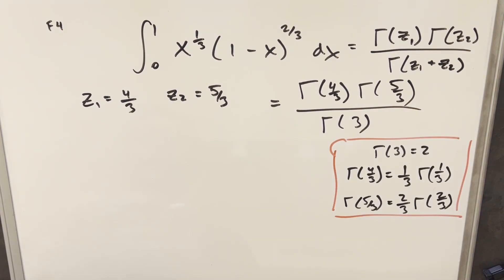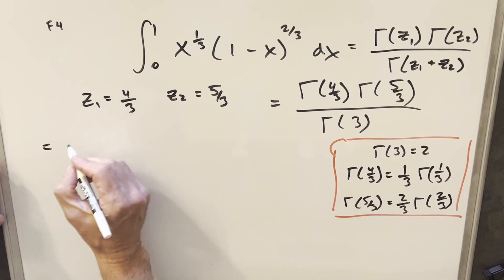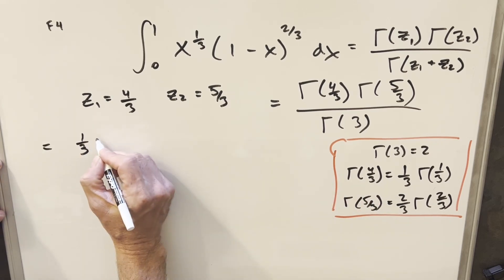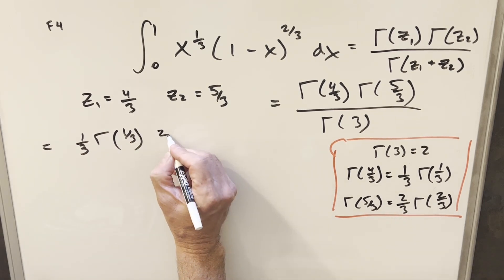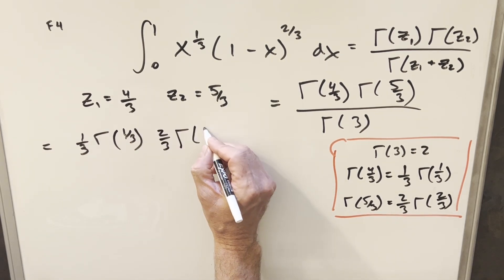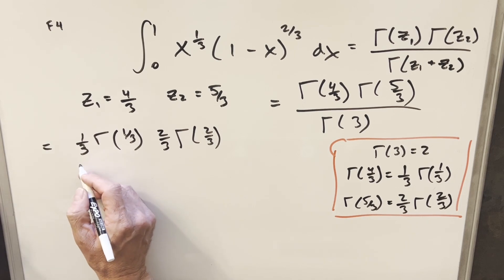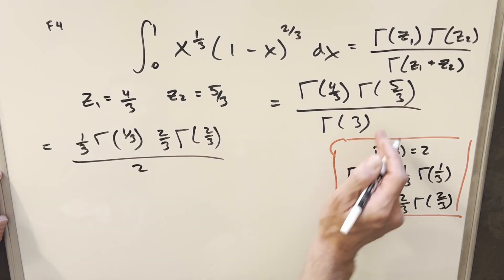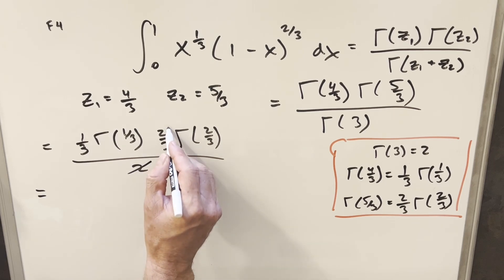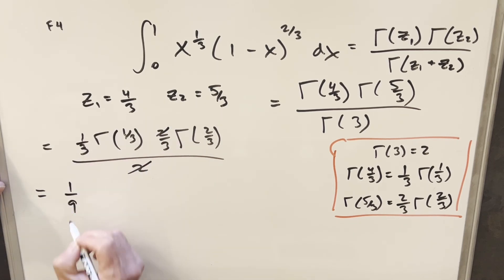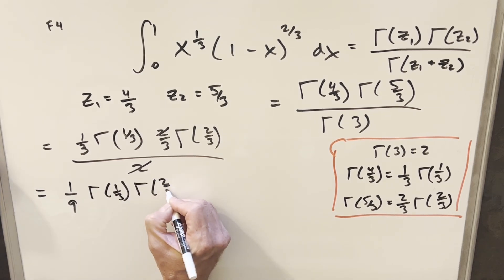So now from here, I'm going to take these values that we found and plug them in here to continue. For gamma of 4/3, I'm going to write this as 1/3 times gamma of 1/3. Then for gamma of 5/3, we'll have this value of 2/3 times gamma of 2/3. And then in the denominator here, we're just going to have this gamma 3, which is 2. Then a little simplification, I can cancel this 2 with this 2 here, and then multiplying 1/3 times 2/3, we're going to have 1/9 in front, and then we're just multiplying gamma of 1/3 times gamma of 2/3.